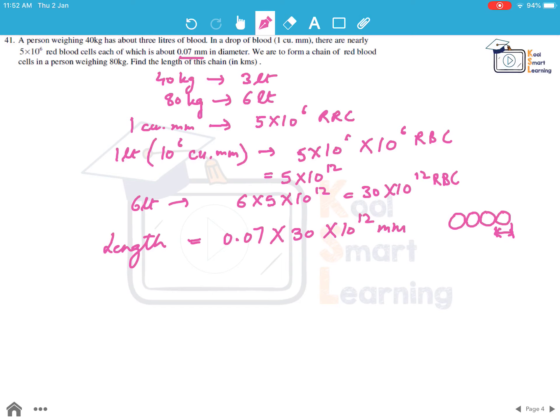So 0.07 into 30 into 10 to the power 12 mm will be there. This comes out to be 2.1 into 10 to the power 12 mm, or since we have to give the answer in kilometres this becomes 2.1 into 10 to the power 6 kilometres. So this is the length of the chain which will be formed.